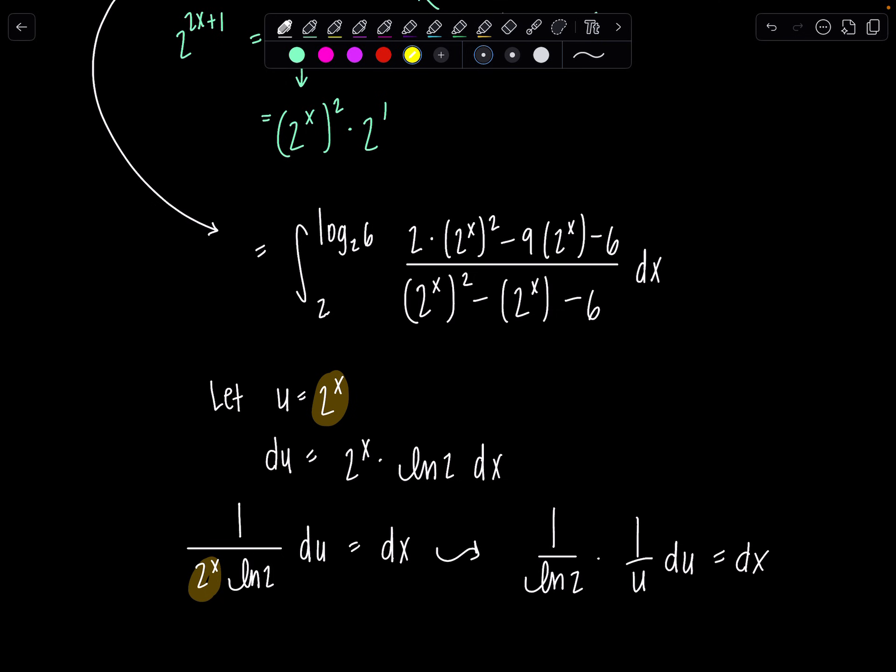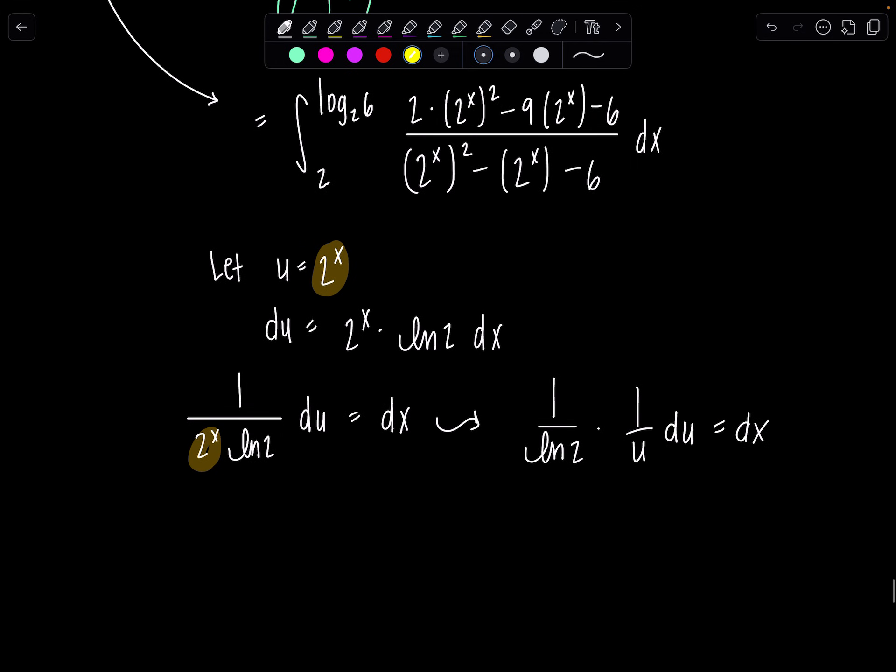Last thing, don't forget, don't be sloppy. We have to change our limits of integration. Currently these limits 2 and log base 2 of 6 belong to x, so I'm going to substitute them in. u(2) is 2^2, that's 4. And then u(log base 2 of 6), that's 2 raised to the log base 2 of 6, which is 6.